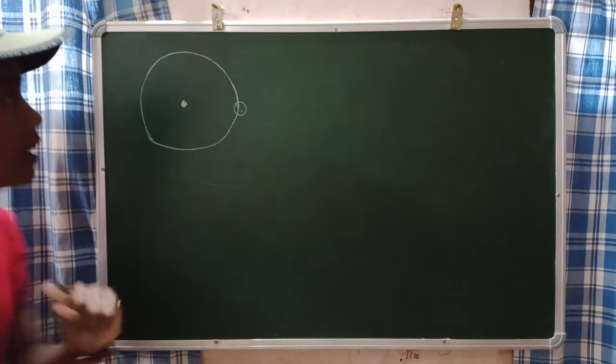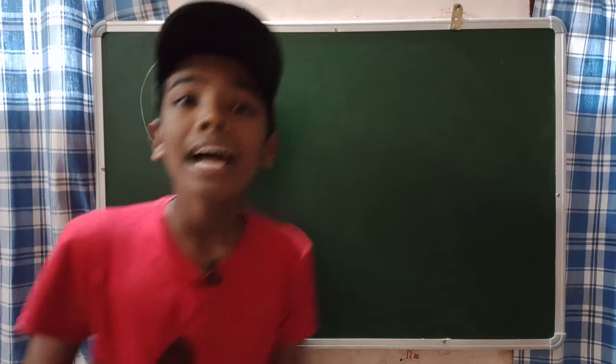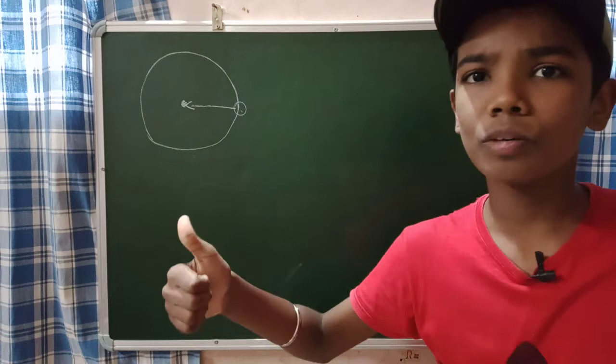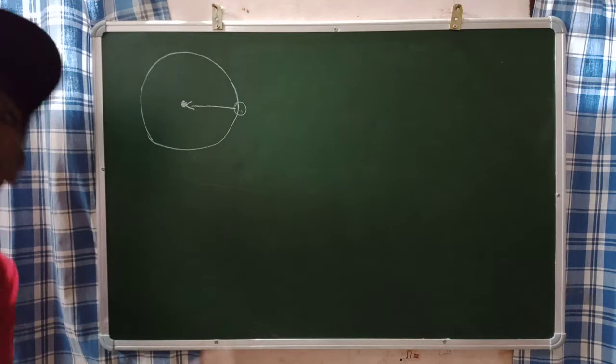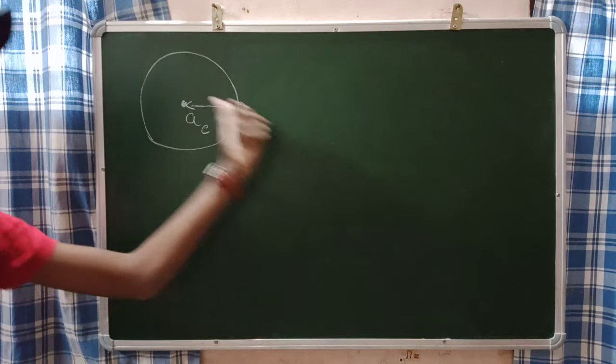The first one is your centripetal acceleration, which acts towards the center. Centripetal acceleration means the acceleration towards the center. For every particle in circular motion, centripetal acceleration must act. So for this particle in non-uniform circular motion, centripetal acceleration acts. I will represent it as AC — acceleration centripetal — which is directed towards the center.